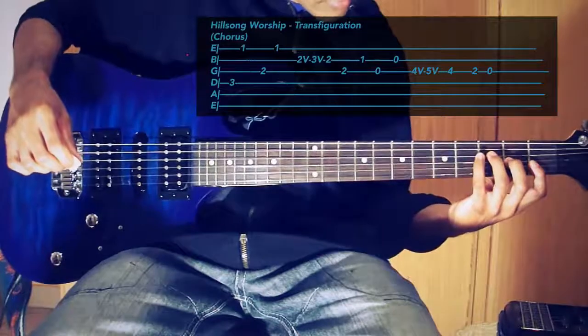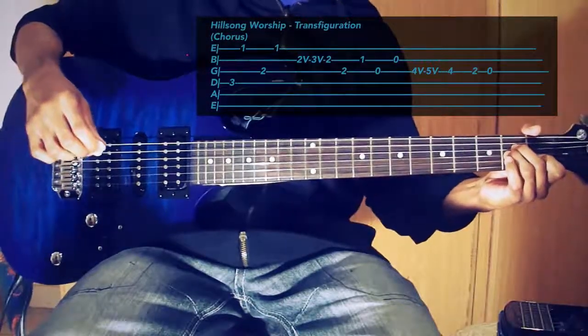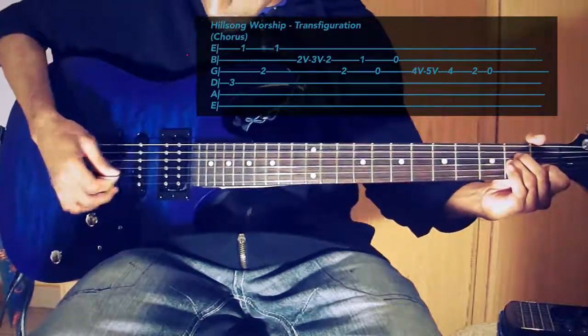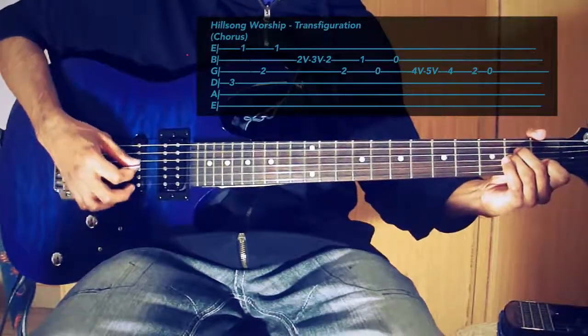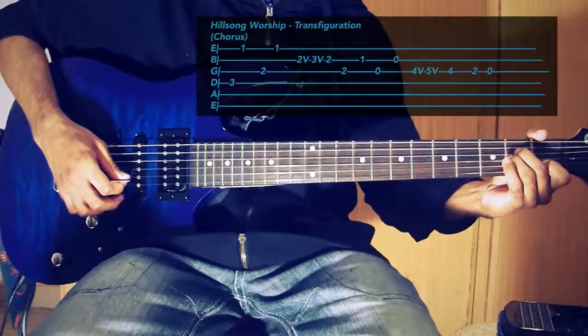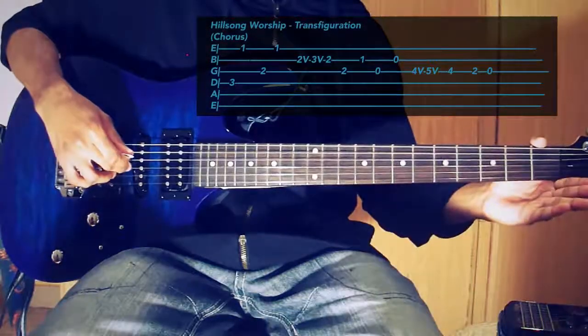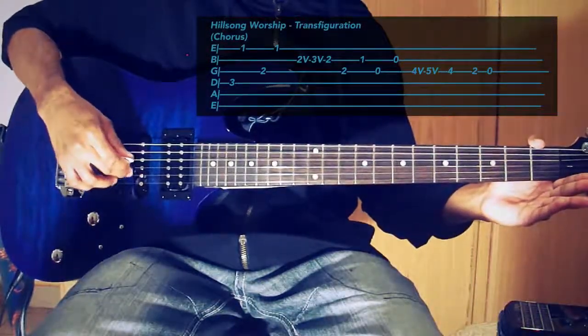And then you are going to hold the A minor chord and then you are going to pick the G string and the B string. Then you are going to release the chord and you are just going to pick the G string and the B string.